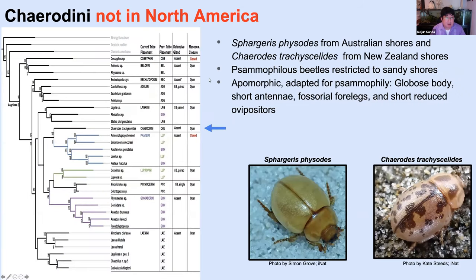Another tribe that doesn't occur in the US is Carodini — a very scarabaeiform tenebrionid found on the beaches of Australia and New Zealand, similar to some diaporines we looked at yesterday like Filaria and Trachycelis. It has fossorial forelegs for that lifestyle, very reduced ovipositors, and very compact antennae with clubs. These don't have defensive glands.